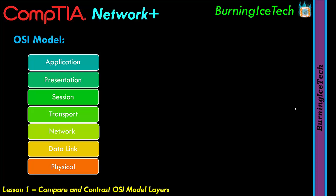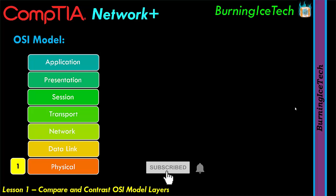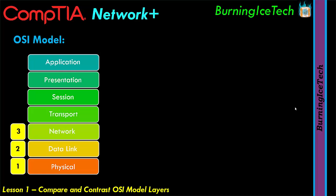Even though that is how I've presented them, that is actually the incorrect order. Normally we work from the bottom to the top. The bottom one, physical, is actually layer one. Data link above it is layer two, network is layer three, transport is four, session is five, presentation is six, and lastly application is layer seven.